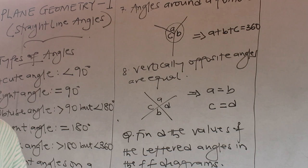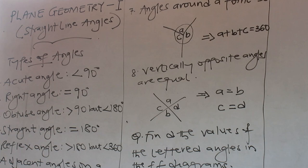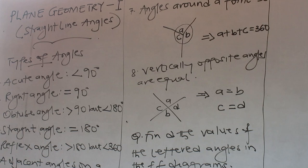Welcome to our new general mathematics topic: plane geometry. We're starting with plane geometry part one, looking at angle properties of straight lines, then moving to angle properties of triangles, quadrilaterals, and polygons. Plane geometry part two will cover angle properties of circles, which we normally call circle theorems. We're starting with angle properties of parallel lines, but first we'll cover types of angles and straight line angles.